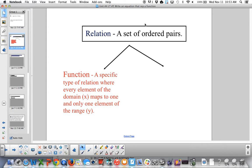A relation is just a set of ordered pairs, but a specific kind of relation is a function when every element of the domain, which is our x, maps to one and only one element of the range. So a function is a very specific kind of relation. And if you don't have a function, then you just have a relation.